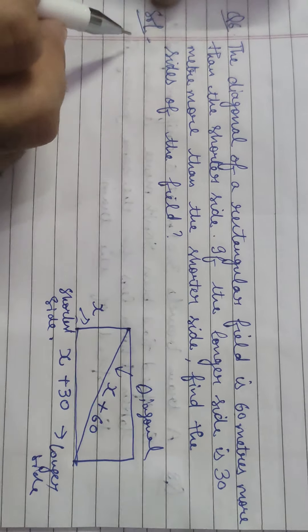Rearranging the equation: −X² + 25X + 54 − 210 = 0, giving −X² + 25X − 156 = 0, or X² − 25X + 156 = 0. This is our quadratic equation.